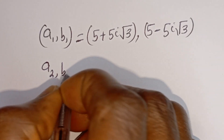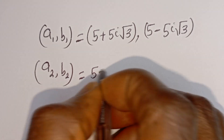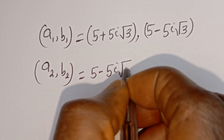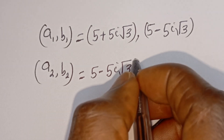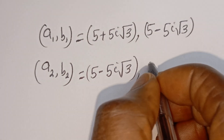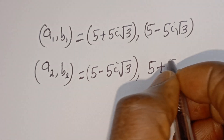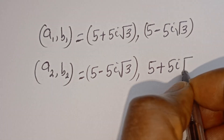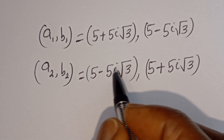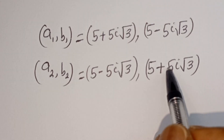Therefore our final answers are: (a1, b1) is equal to (5 plus 5i root 3, 5 minus 5i root 3), and (a2, b2) is equal to (5 minus 5i root 3, 5 plus 5i root 3). We can see that a1 equals b2 and b1 equals a2.